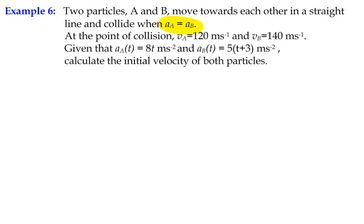We're trying to calculate the initial velocity of both particles, and all we know is functions of acceleration. This time we don't actually have any information about the time of collision. We're assuming that the particles did not start at rest as the previous example did — the clock started at t equals zero when the particles were already moving with a particular velocity and acceleration, so we can't assume that when t equals zero the velocity equals zero.